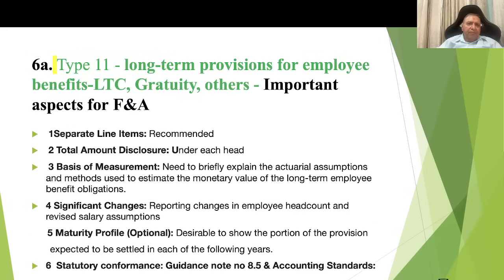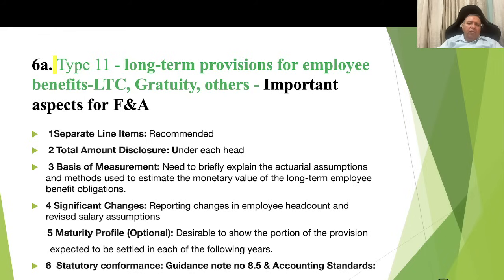Type 11 — long-term provisions for employee benefits like LTC, gratuity, and others. Each benefit needs to be reflected in separate line items. Disclosures should include the total amount under each head, the basis of measurement, and the finance team needs to briefly explain the actuarial assumptions and methods used to estimate the monetary value of long-term employee benefit obligations. Significant changes in employee headcount and revised salary assumptions, if any, need to be reported. Maturity profile should ideally show the portion of provisions expected to be settled in each following year. Guidance note 8.5 and applicable accounting standards need to be followed.